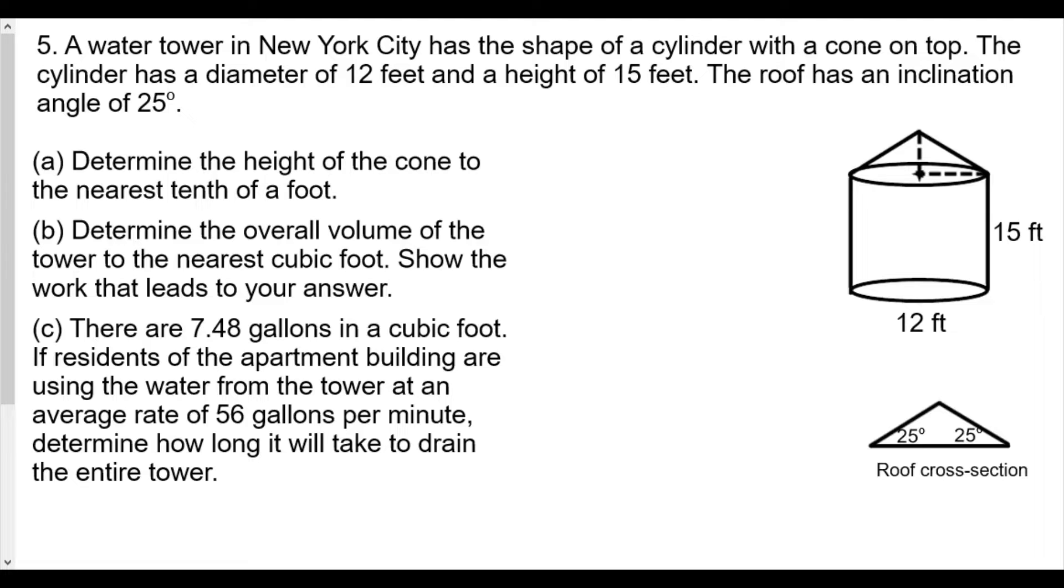The cone has the same diameter as the cylinder, so it definitely has a diameter of 12 feet, which means the radius is going to be 6 feet. But the height we don't know. We do know that if you do a cross-section, the angle of inclination will be 25 degrees.